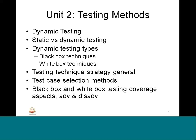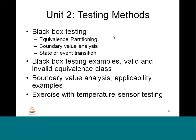Unit 2 covered testing methods in detail — dynamic testing, static versus dynamic testing context, dynamic testing types, black box and white box techniques, testing strategy in general and specific to embedded software complexity, test case selection methods, black box and white box coverage advantages and disadvantages. For black box testing, we studied equivalence partitioning, boundary value analysis, and state/event transition testing, going through the fundamentals and drawing various test cases.